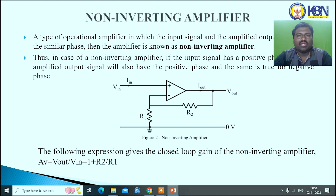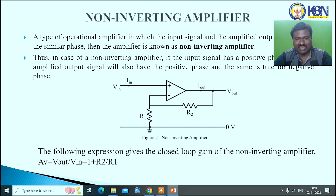A non-inverting amplifier is a type of operational amplifier in which the input signal and the amplified output are in the same phase — 0 degrees or 360 degrees. If the input signal is positive, the amplified output signal is also positive, and the same is true for negative phase. The expression for the closed-loop gain of a non-inverting amplifier is: gain equals 1 plus R2 divided by R1. The inverting terminal is grounded and the non-inverting terminal is connected to the input.